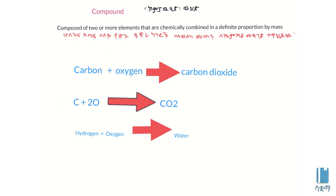The definite proportion by mass means the components are in fixed ratios. An example is carbon dioxide - carbon plus oxygen forms carbon dioxide.